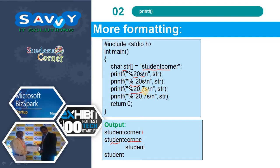Using %20.7s means a total width of 20 with only the first 7 characters of the string printed, followed by the appropriate spacing.